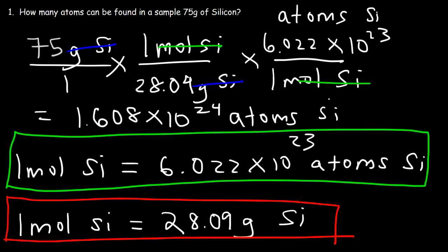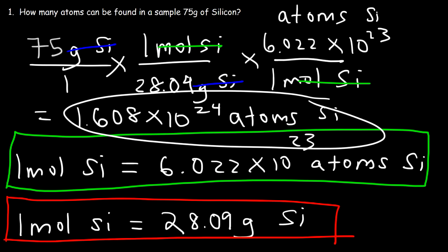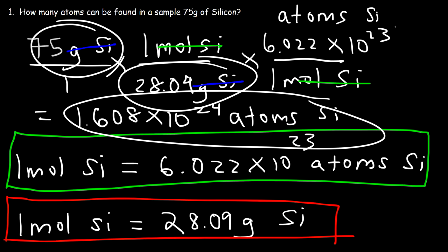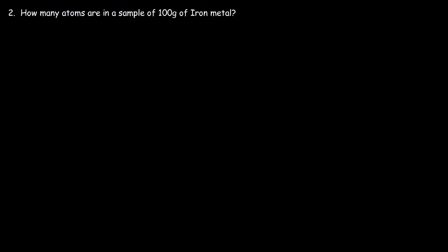So that's how you can convert grams to atoms. Basically, you take the mass in grams, divide it by the molar mass, and then multiply it by Avogadro's number. But if you want to take the step-by-step approach, it's good practice, because later on in chemistry you're going to be dealing with harder problems. You want to master stoichiometry and converting one unit to another. Let's work on number two: how many atoms are in a sample of 100 grams of iron metal?